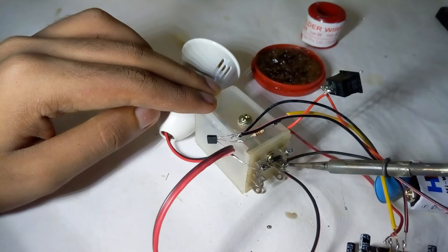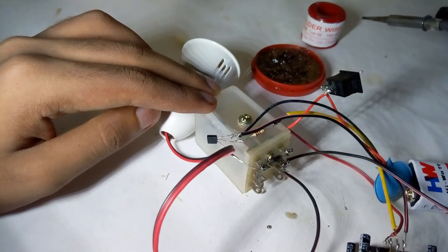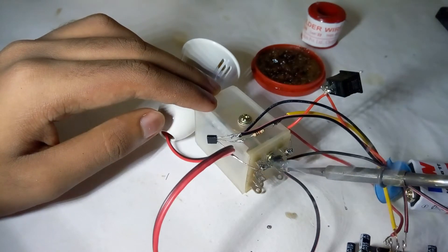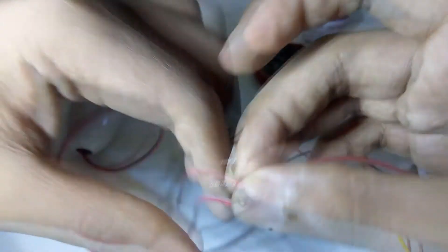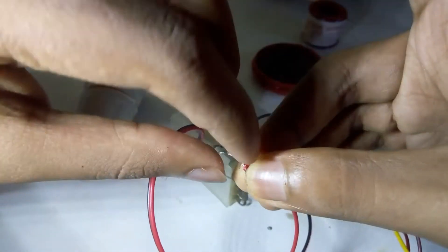When the current flows, magnetic induction comes and the metal pieces are pulled towards it. So the circuit is completed.